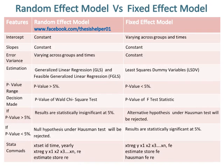The intercept of the Random Effect Model is constant, whereas the intercept of the Fixed Effect Model is varying across groups and times. The slopes of the Random Effect Model are constant, whereas the slopes of the Fixed Effect Model are constant. The error variance of the Random Effect Model is varying across groups and times, whereas the error variance of the Fixed Effect Model is constant.